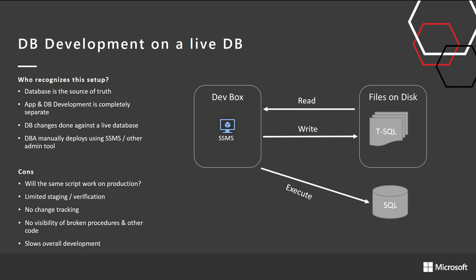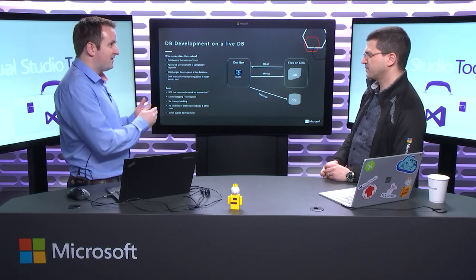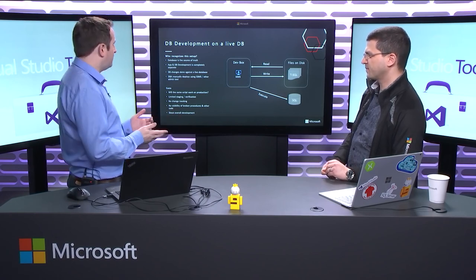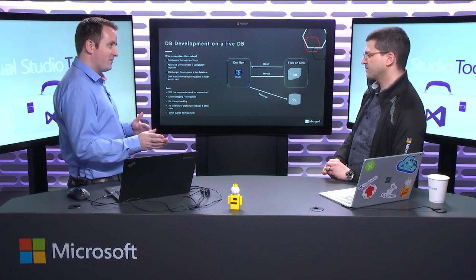Often you end up developing directly against stage or sometimes even production. You make your changes right there. There's like a data person on the team — a DBA or the database guy — managing the staging environment. If somebody needs to deploy some SQL, they deploy it there. You come in the next day and your code isn't working. It's always been kind of messy, and it's hard to track your changes and know when things are going to happen. It gets disconnected and slows down your development.